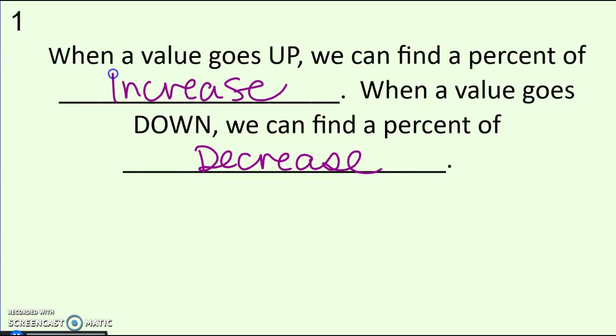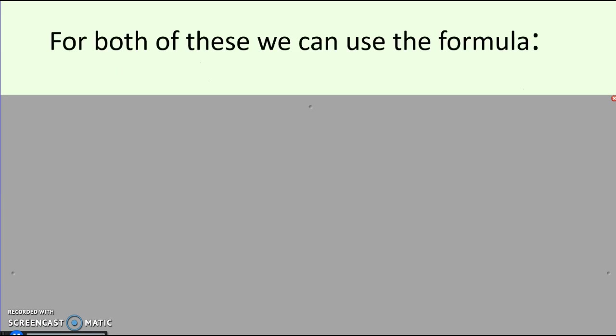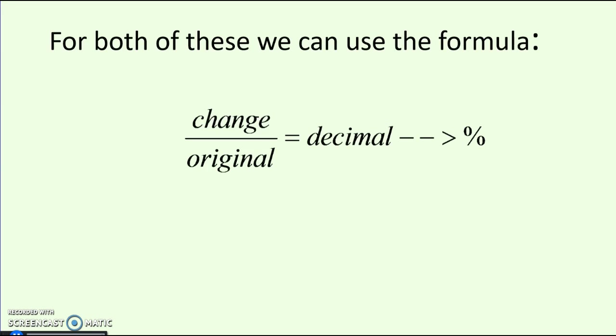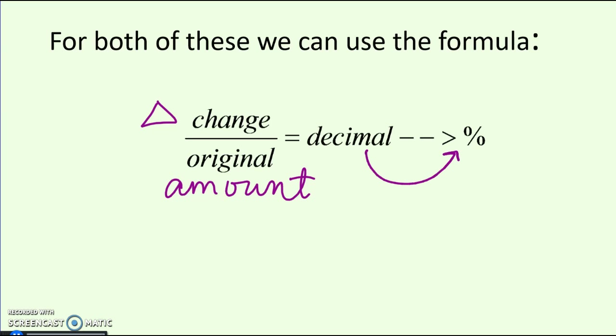We're going to use those words a lot to clarify if it went up or down. For both of these, there's a formula — write this down. The formula is: find the change (delta) divided by the original amount. When you divide those on your calculator, you'll get a decimal, but you need to turn that decimal into a percent and then label it either a decrease or an increase, so people know it went up or down by that much.